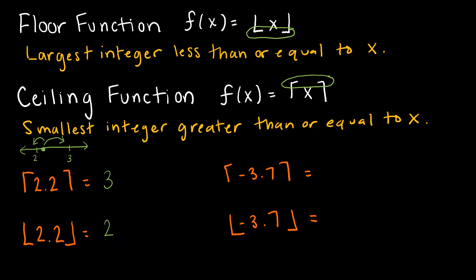Same thing happens for my negative 3.7, but just be careful how you put these numbers on the number line. Remember, 0 is over here somewhere. This would be negative 3. This would be negative 4. And negative 3.7 somewhere in here. And then if I'm rounding up for my ceiling function, I end up at negative 3. If I'm rounding down to my floor function, I end up at negative 4. So just be very careful with your negatives.